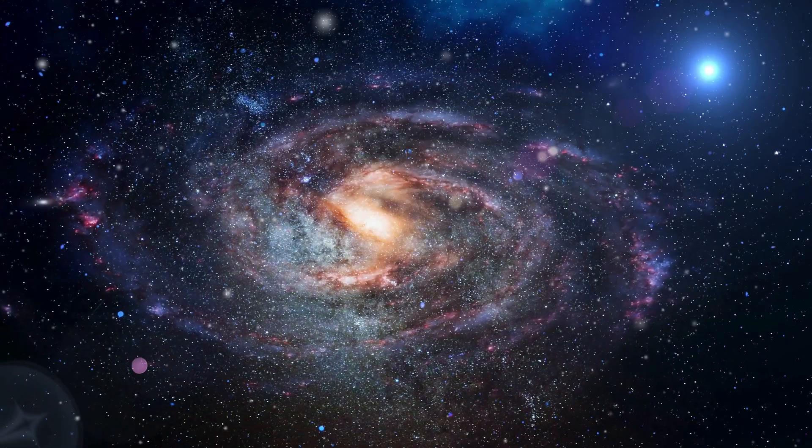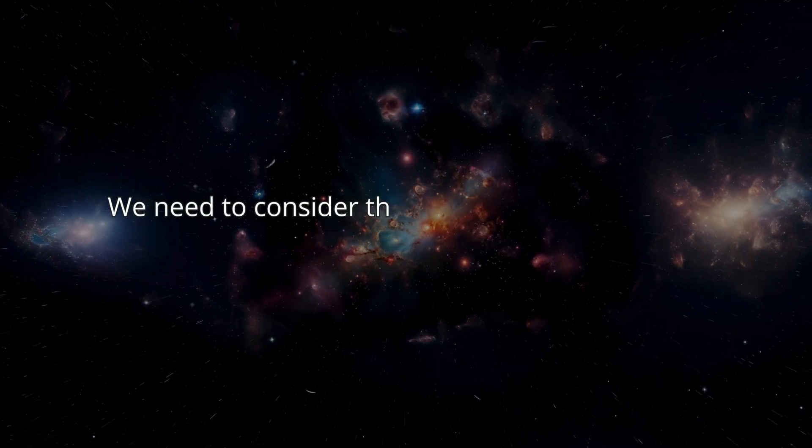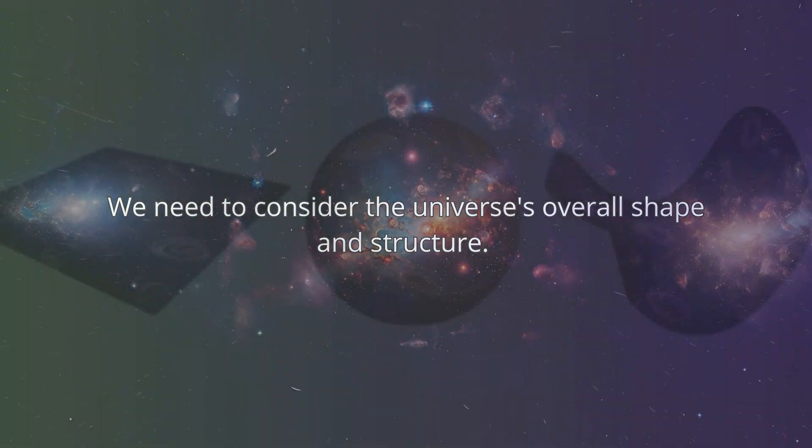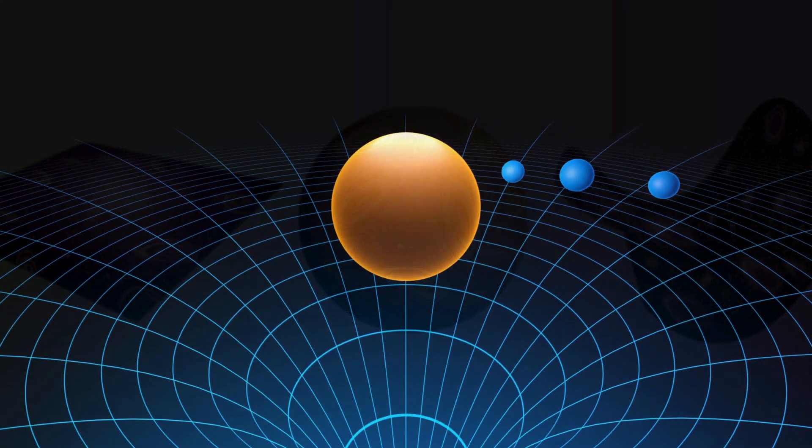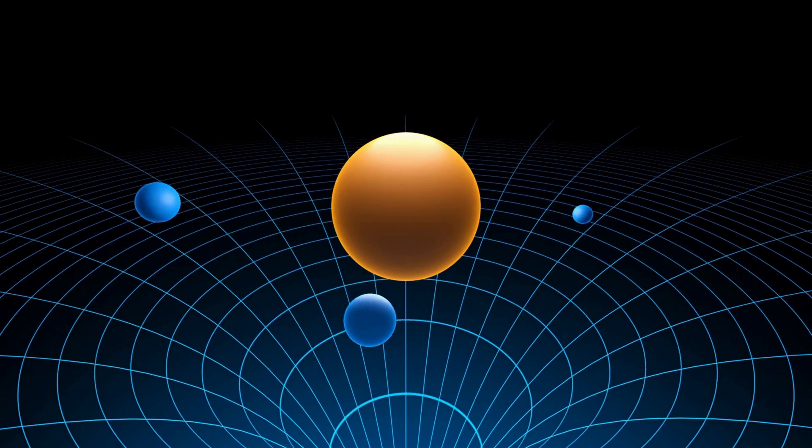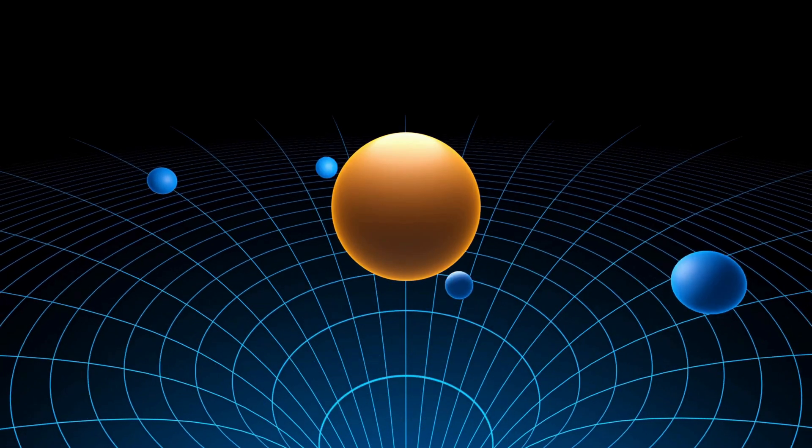To understand what lies beyond, we need to consider the universe's overall shape and structure. Cosmologists propose three primary models based on Einstein's theory of general relativity and astronomical observations.